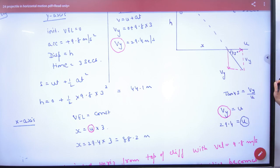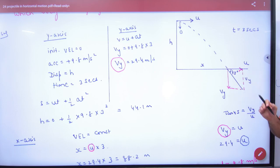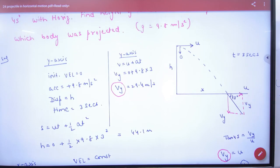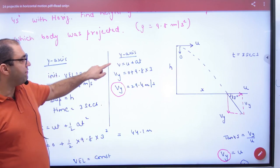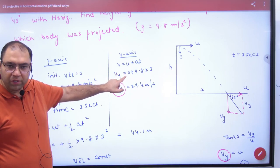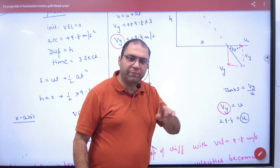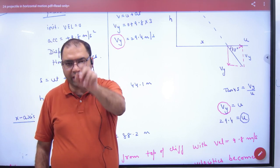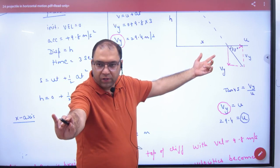Now, vy can be found from the y-axis equation: v = u + at. The final vertical velocity vy = 0 + 9.8 × 3 = 29.4 m/s. Since vy = U, therefore U = 29.4 m/s. Both the height and initial speed are now found. The horizontal distance x = U × 3 can also be calculated from here.